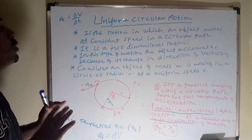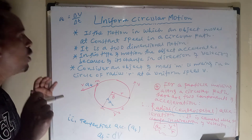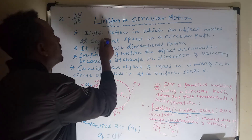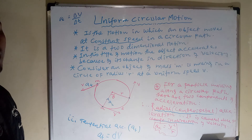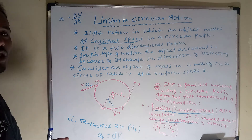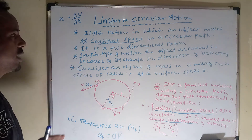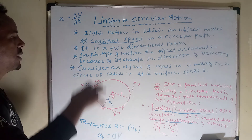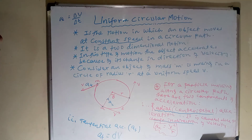In general, uniform circular motion describes the motion of an object moving at constant speed along a circular path. It is a two-dimensional motion, just like projectile motion. The two components of acceleration involved are centripetal (radial) acceleration and tangential acceleration.